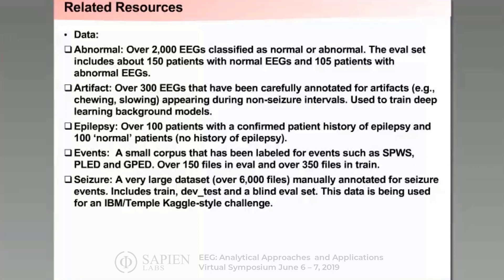The main resources we've built include the basic corpus, currently version 1.1.0. We're about to release a new version including all data through 2016, and hopefully by end of summer we'll release everything through 2019. Perhaps the most significant subset is the seizure corpus, where we've manually annotated over 6,000 EDF files for seizure events, enabling automatic seizure detection research. This data has been carefully annotated by trained undergraduates and validated against neurologists — and in some cases, our student annotators are more accurate than the neurologists because they do very detailed annotations.